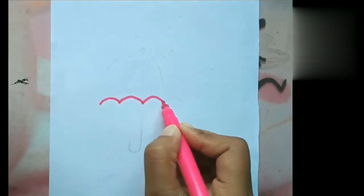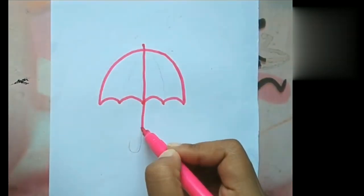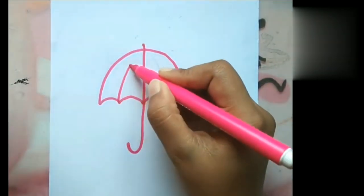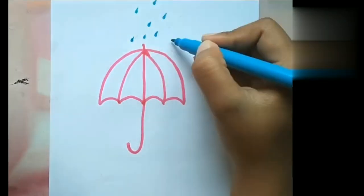First write 2 M's. Then draw an inverted U. Draw a J in the middle. Connect them. Add a few dots and the umbrella is finished.